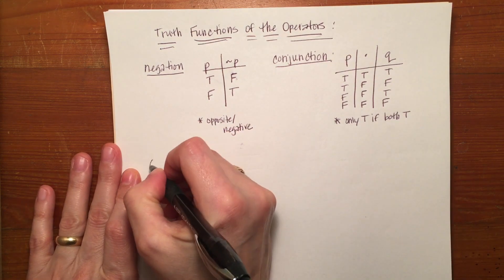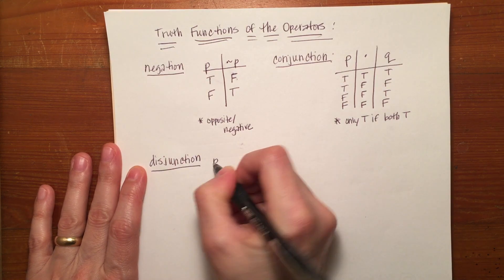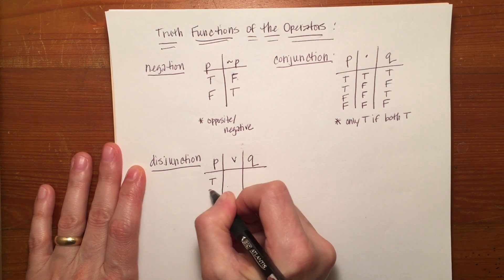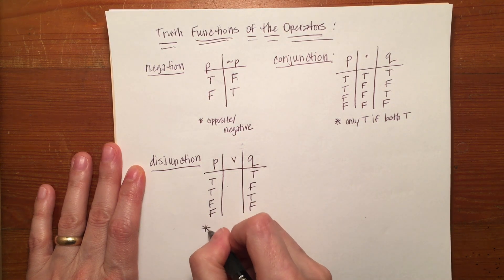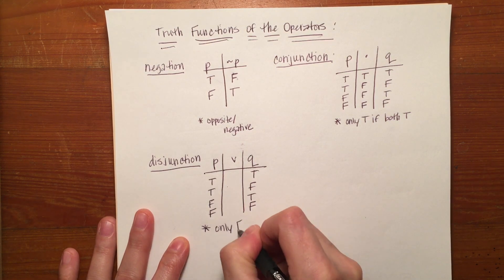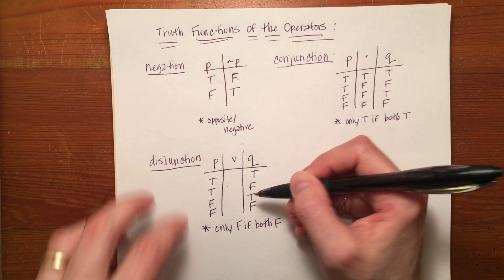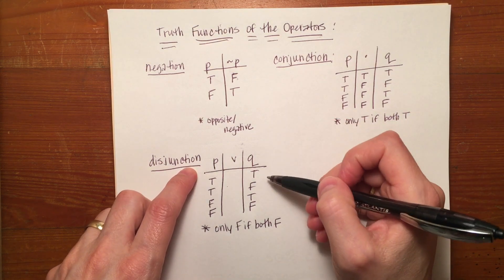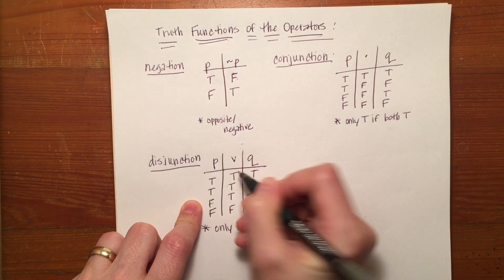Now if we look at disjunction — p or q — we set it up the same way: true-true, true-false, false-true, false-false. But here the rule is that it's only false if they're both false. So I'm looking for any place where both sides are false — that's the last or fourth line. The rest are true by process of elimination. So you memorize the rules, not necessarily these entire tables.